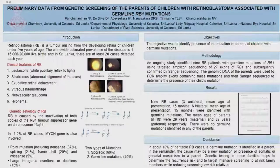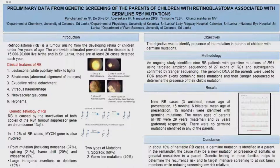Retinoblastoma is a childhood tumour with an estimated prevalence of 1 in 15,000 to 20,000 worldwide, and in Sri Lanka at least 20 cases are detected each year. There are two types of retinoblastoma: hereditary and non-hereditary retinoblastoma.